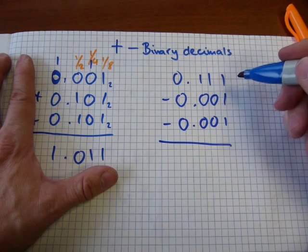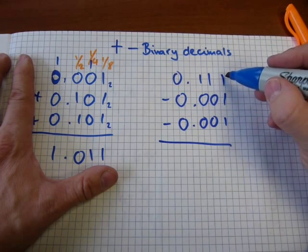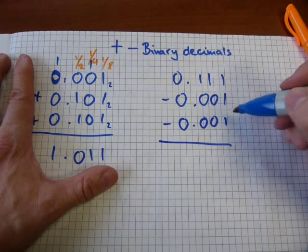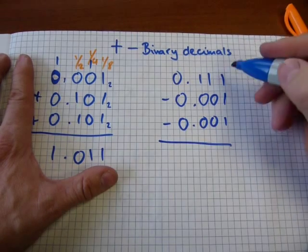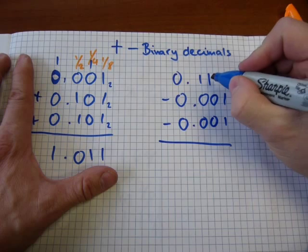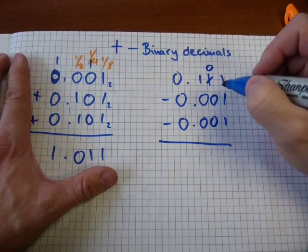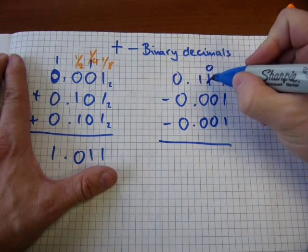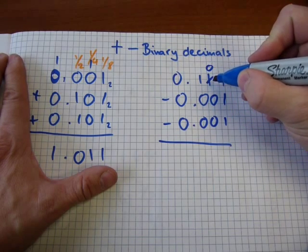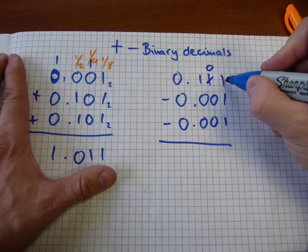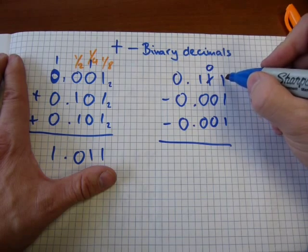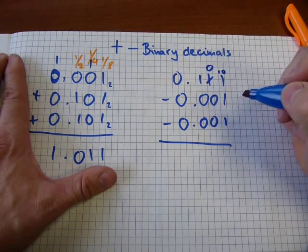And this one needs borrowing, because from one you cannot take away two. And what you need to do is borrow from the previous column. So that one comes out and becomes a zero, because one standing in the quarters place value column will break into two of these, two at the eighth column.